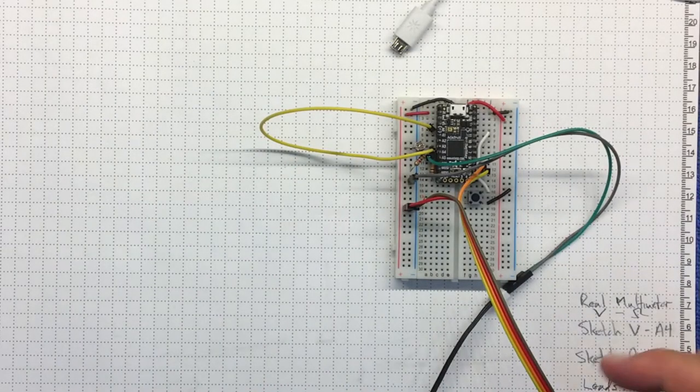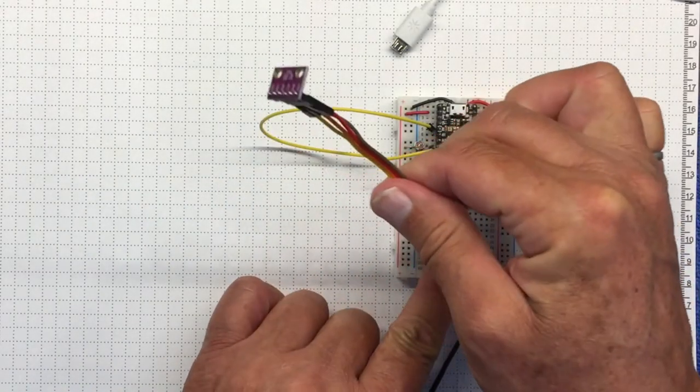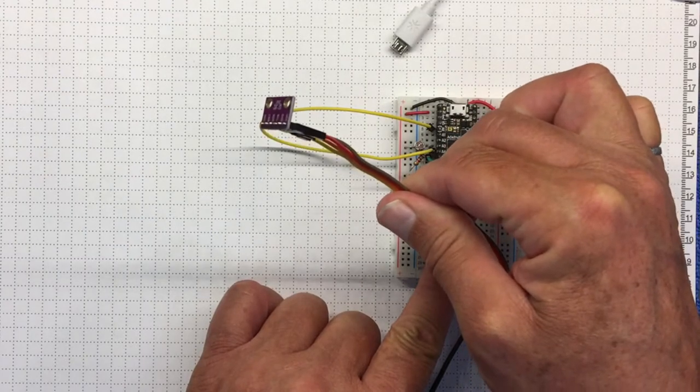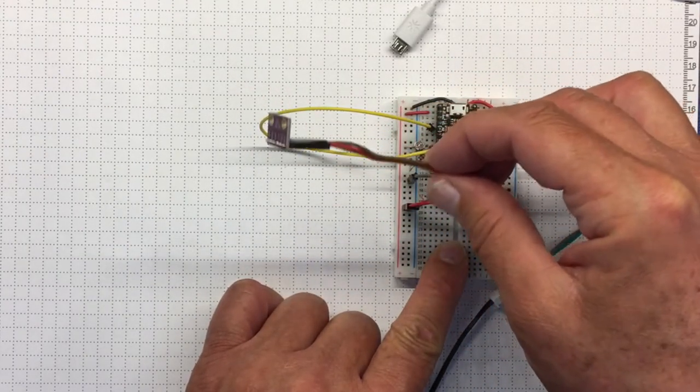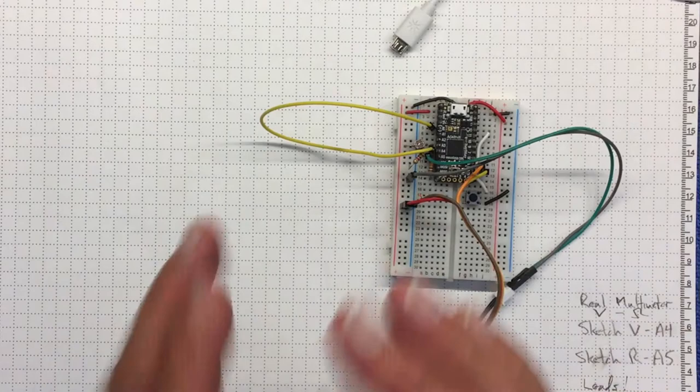So I should now be able to measure from my pressure transducer out at the end of the cable. Putting it at the end of the cable means that we can relocate it a little further away from the board.